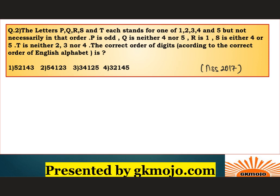Question 2: P, Q, R, S, T stand for one of 1, 2, 3, 4, 5 — but not necessarily in that order. The conditions are: P is odd; Q is neither 4 nor 5; R is 1; S is either 4 or 5; T is neither 2, 3, nor 4. We need to find the correct order of digits according to the order of English alphabets. We'll figure out P, Q, R, S, T. P is odd, so from the range P can be 1, 3, or 5. Q is neither 4 nor 5, so Q can be 1, 2, or 3.